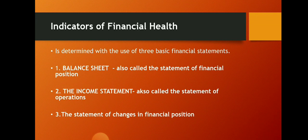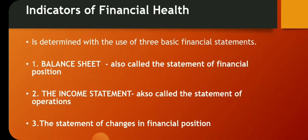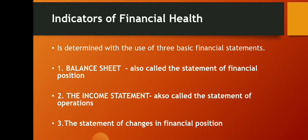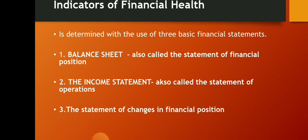Indicators of financial health are determined using three basic financial statements. The first is the balance sheet, also called the statement of financial position — mentioned in chapter 11. The second is the income statement, also called the statement of operations. The third is the statement of changes in financial position. Try to observe the differences among these three financial statements.